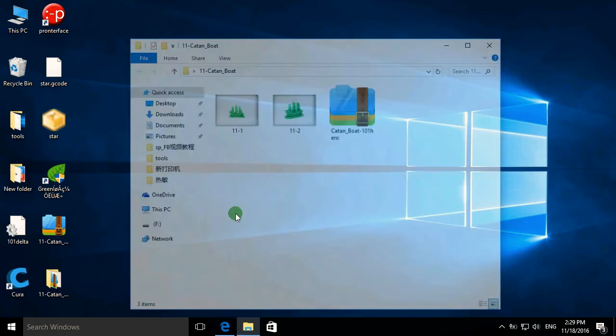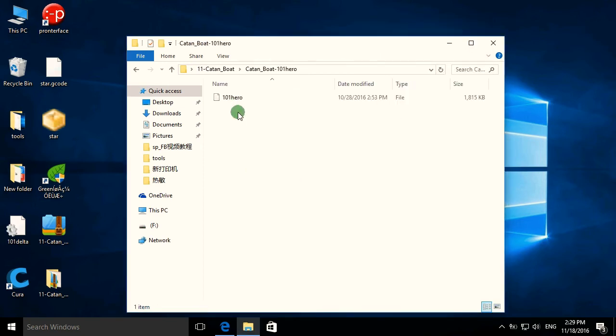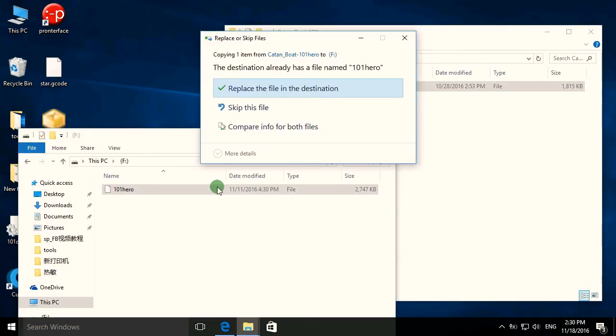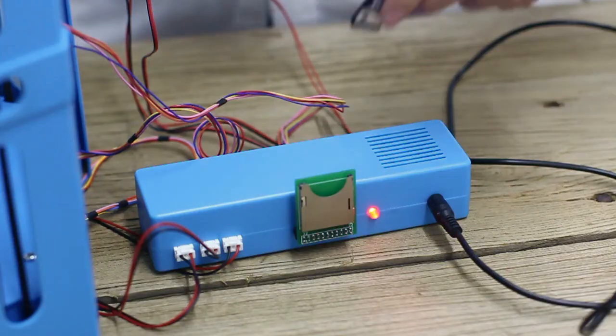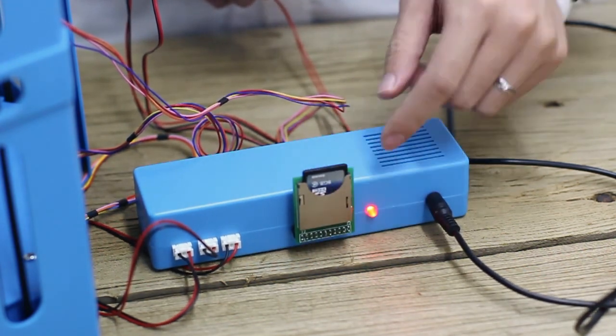The next step is open the folder on the desktop and unzip the folder on the right side. Copy the 101 hero file into your SD card. Then take out the SD card and insert it to the printer.